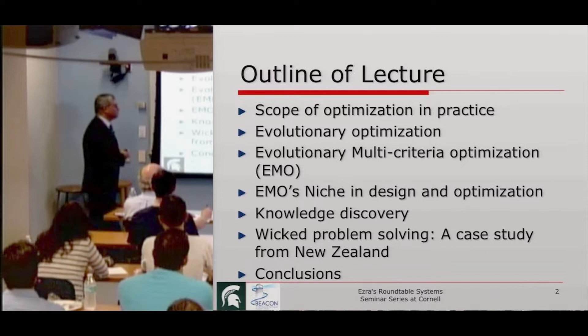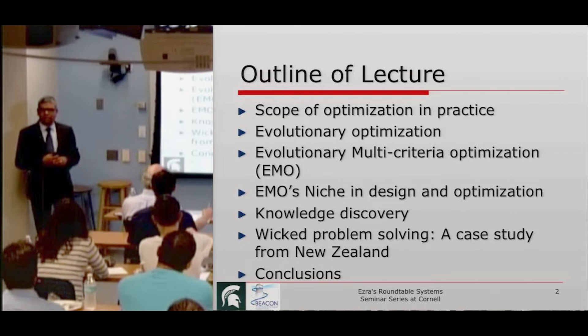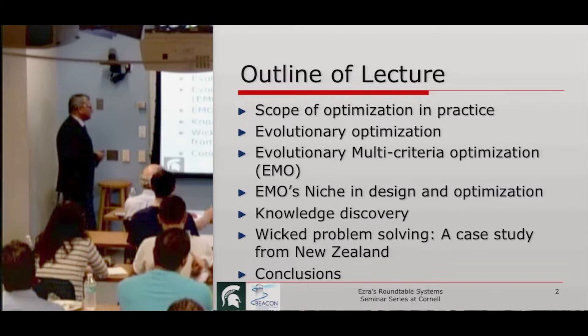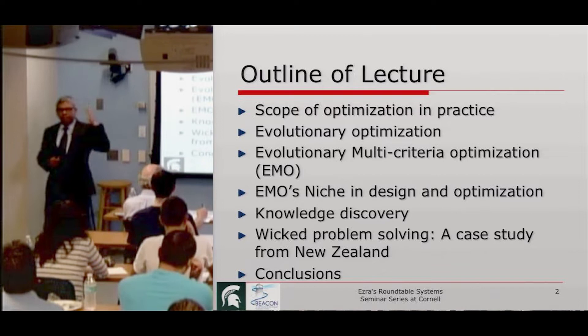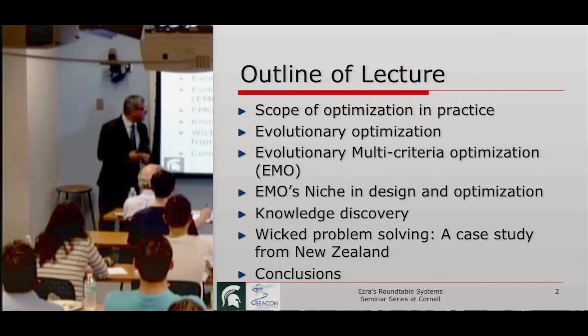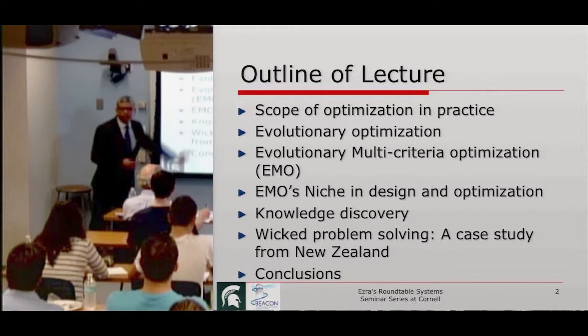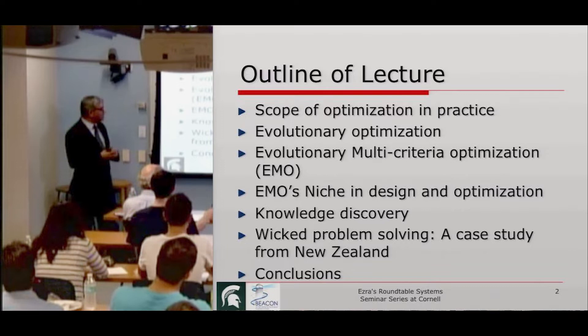Then I'll talk very briefly about evolutionary optimization. That started from University of Michigan with John Holland — unfortunately, he just passed away last month. He started working on what he called genetic algorithms back in the early 1960s, and now they're more popularly known as evolutionary algorithms. I have been responsible for starting some of this work, more than 22 years ago, on EMO — evolutionary multi-criteria optimization — and I'm glad that it has taken off. A lot of people are finding them useful, both in research as well as in applications, and I'll discuss how EMO is going to be useful in various kinds of design and optimization problems.